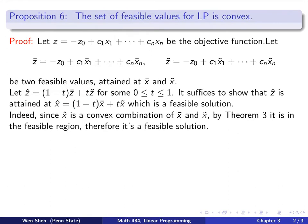There are a few things we need to show here. First, we need to show that x-hat shall be a feasible solution. Why is this true? Well, x-hat is a convex combination of x-bar and x-tilde, and x-bar and x-tilde are both in the feasible region, which is convex. Therefore, by Theorem 3, x-hat is in the feasible region and is a feasible solution.